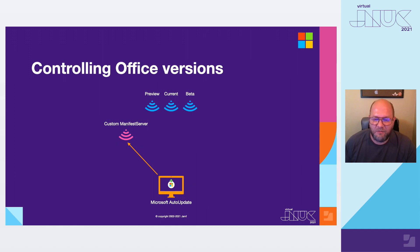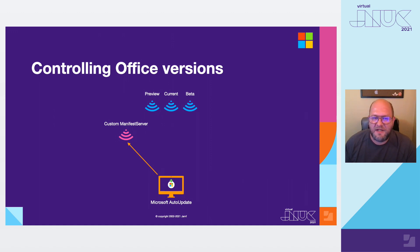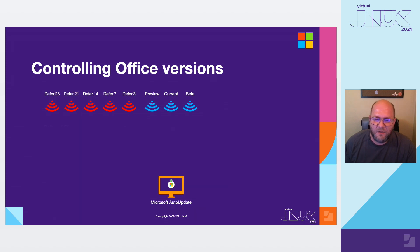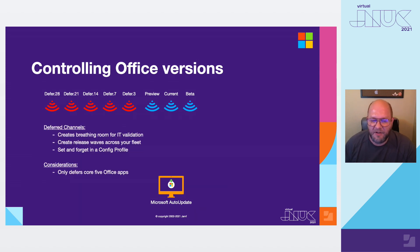Although the custom manifest server has worked really well for many Mac admins, we noticed that a lot of these custom servers were set up to perform the same purpose — things like just delaying updates for a week while you get a chance to validate that Outlook isn't broken in the new update. We looked at the patterns and said: this is a whole bunch of overhead we're putting on Mac admins by getting them to set up their own manifest server. So can we do something smarter and have something more hosted and managed by us? And so we have a couple of sets of new capabilities available in Jamf Pro. The first is what we call deferred channels — they create some breathing room for your IT validation. For example, you can say: I want to defer my updates for seven days.